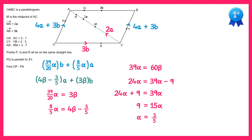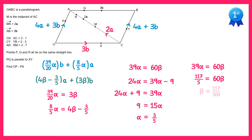Now we also need beta, so returning to the first equation and replacing alpha with 3 fifths: 39 times 3 fifths equals 60 beta. The left-hand side gives 117 over 5. Dividing both sides by 60 gives 117 over 300, which simplifies to 39 over 100. So we've found alpha equals 3 fifths and beta equals 39 over 100.